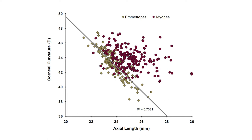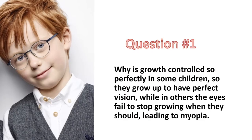Here we've superimposed data from myopes onto the emmetrope data. The variability in corneal curvature among myopes, which are the circles, and among emmetropes, which are the diamonds, is similar. However, the myopes have longer axial lengths as can be seen by the spread of data along the x-axis.